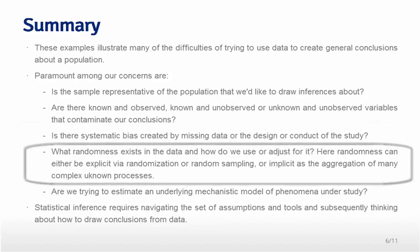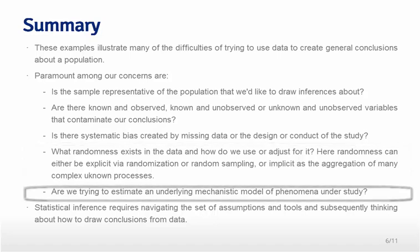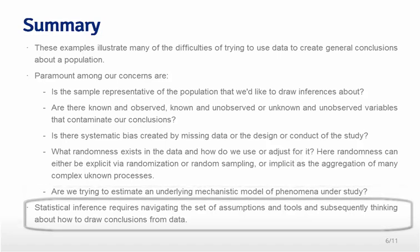Missing data has created a systematic bias that is related to the mechanisms being studied. The next important point is: what randomness exists in the data and how do we use and adjust for it? Randomness can arise in several ways — from the randomization scheme, from the way the data is sampled, and from the assumption that large numbers of unobserved things accumulate in ways that can be modeled as statistical randomness. The final consideration is whether we're trying to estimate some underlying mechanistic model — if so, we can build that model into our statistical inferential probability model. The fundamentals of statistical inference require navigating these assumptions and tools, and subsequently thinking about how to draw conclusions from the data and understanding how robust your conclusions are to those assumptions.